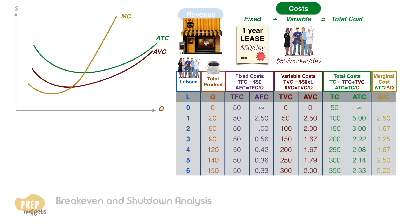One interesting thing to note is that the marginal cost curve intersects the AVC and ATC curves at their minimum points. These two minimums are important as they determine the shutdown and break-even price levels for the firm.